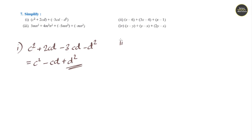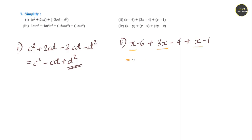Question 2: x minus 6 plus 3x minus 4 plus x minus 1. Grouping all like terms together: x plus 3x plus x gives 5x. Then minus 6 minus 4 is minus 10, minus 1 gives minus 11. Answer is 5x minus 11.